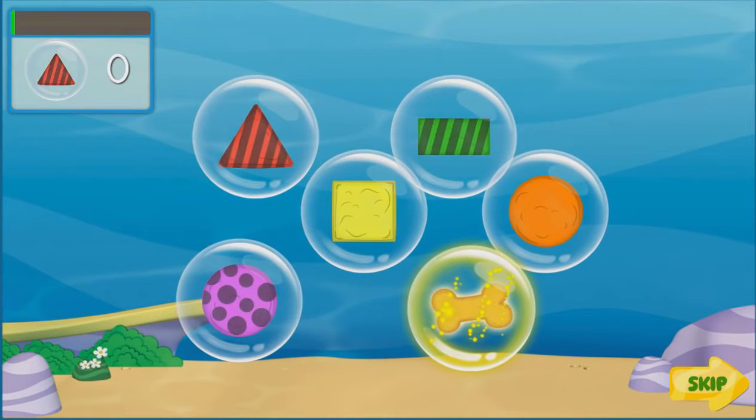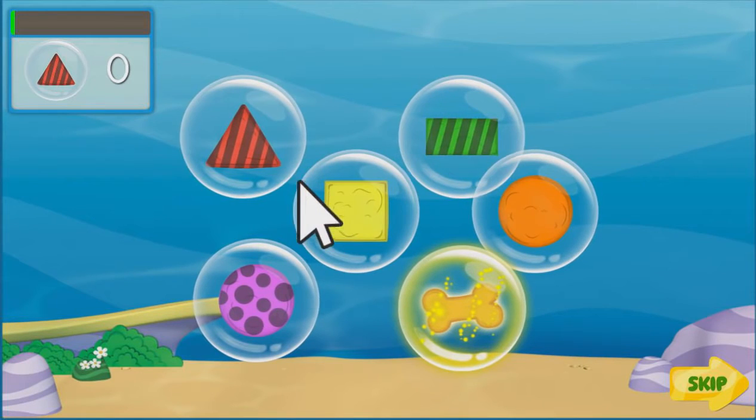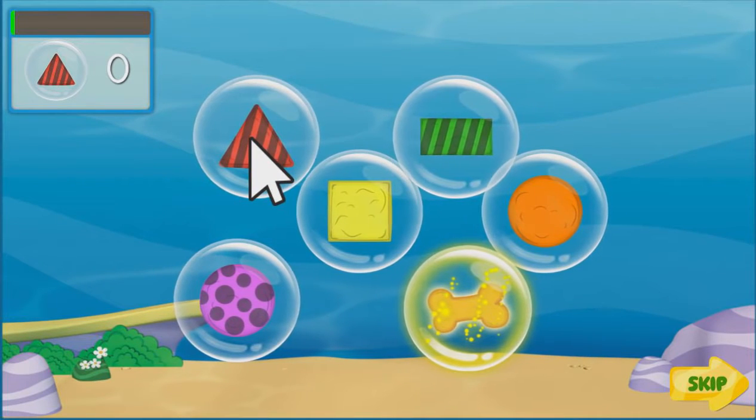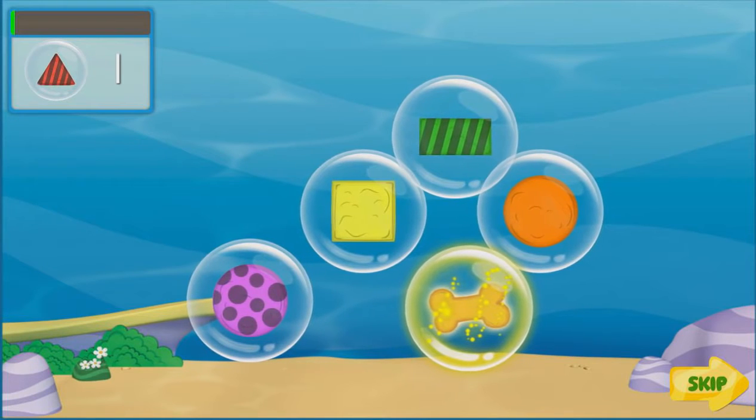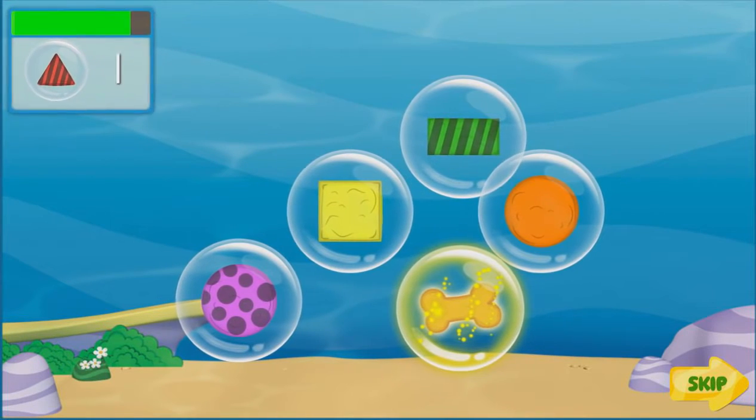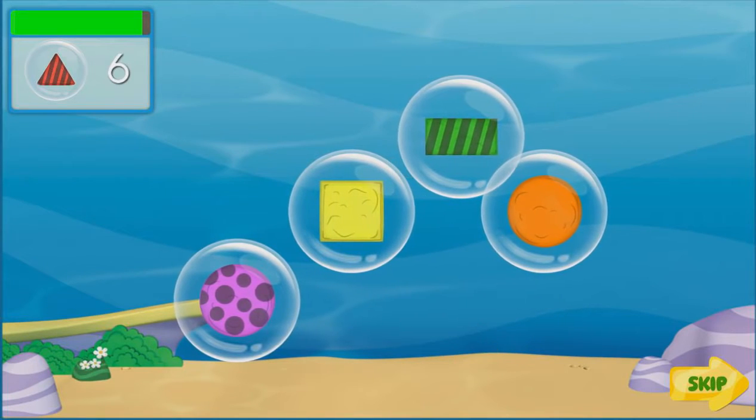Bubble Puppy's a good boy. He deserves some treats. But all the treats are trapped in bubbles. Click the bubbles with your mouse to get the treats Bubble Puppy wants. Click as many of the right treat bubbles as you can before time runs out. To get bonus points, collect all the bone-shaped treats. Ready to play?